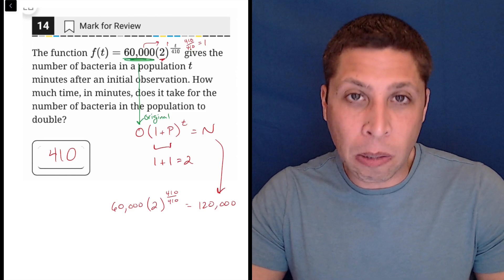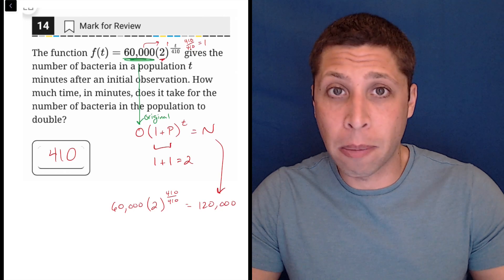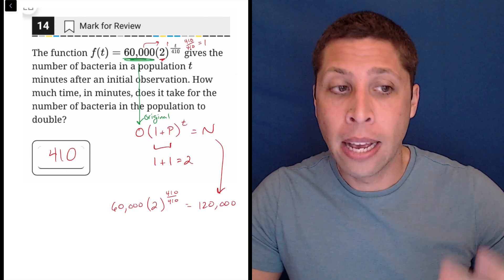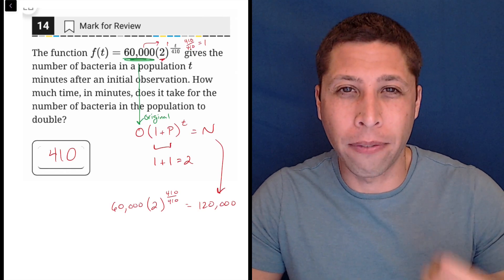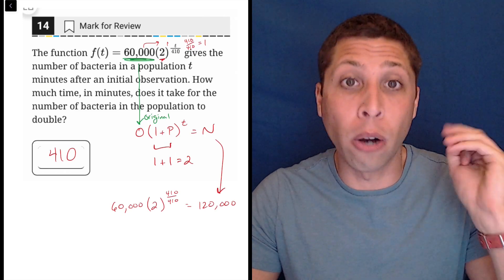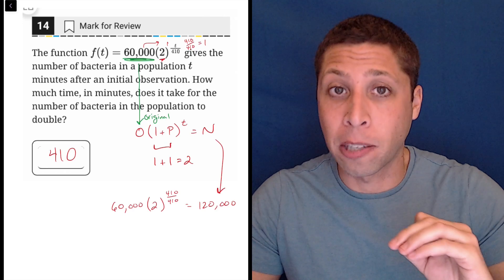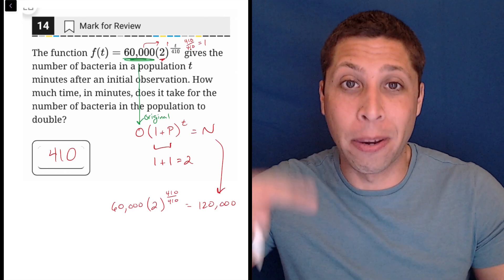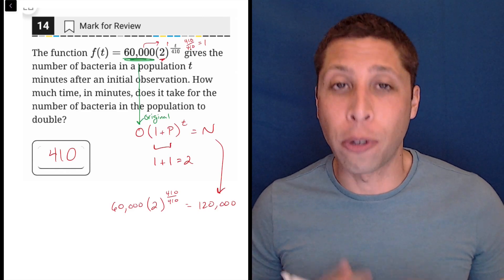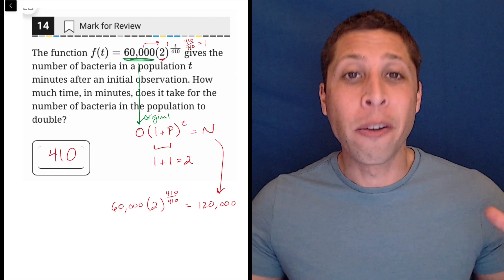But you really want to be comfortable with exponential equations, especially in this format. They are going to ask about it. They're going to ask about it even more when we get to the hard section. This is just a very common SAT topic. So you want to look at that equation and instantly be able to be like, oh, 60,000 is the starting point. The 2 tells me we're doubling, and if I had 410 in that top exponent, it would mean one interval has passed, one doubling has happened. Those are all things you want to be able to get quickly so you can spend more time on the stuff that doesn't fit a nice, easy, repetitive formula.